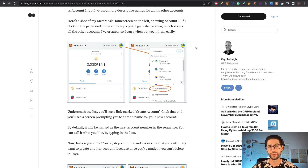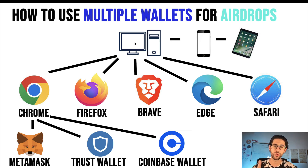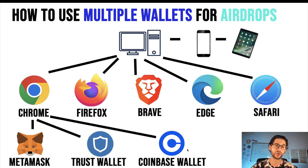That leads us to the second part of the video: what is my strategy? I don't have multiple accounts in each wallet — I only use one address per wallet extension. I put one extension in each browser. So for example, for Chrome I have one MetaMask, a Trust Wallet, and a Coinbase Wallet. There are many other wallets, of course — I just put some examples here.